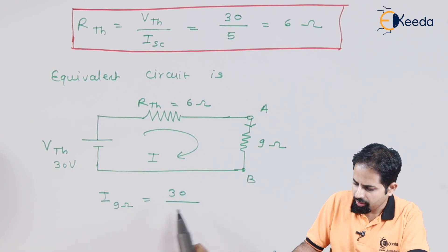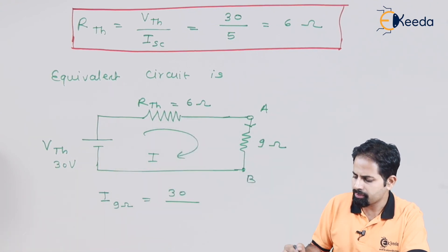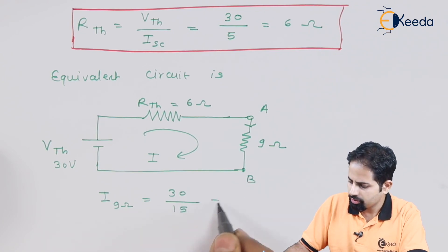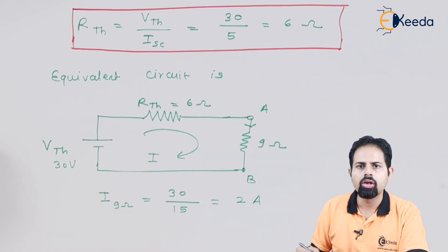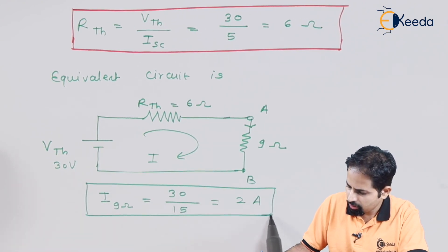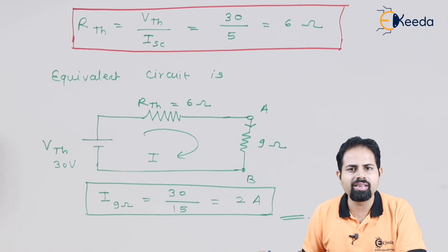So voltage is 30 and total resistance is 6 plus 9, which is equal to 15. So it is going to be 2 amperes. So this is our answer.